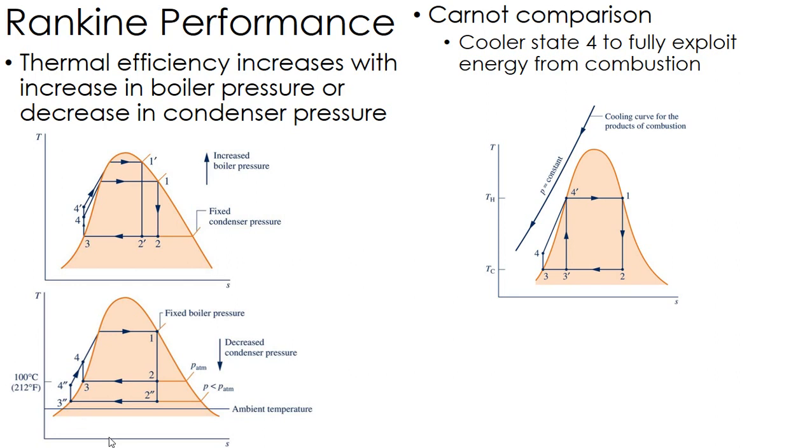Now let's go ahead and compare this to the Carnot cycle. So the Carnot cycle is the rectangle where we've got isothermal, isentropic, back and forth.